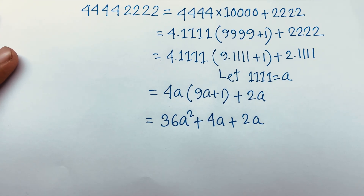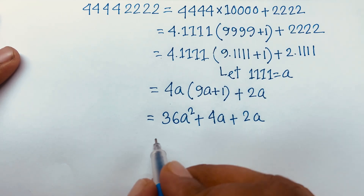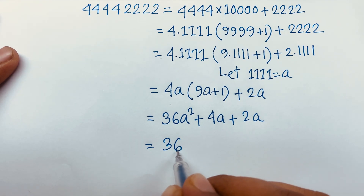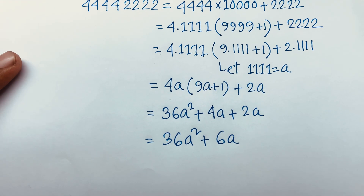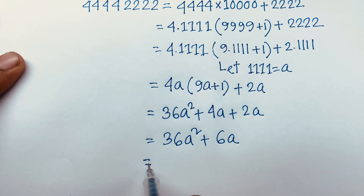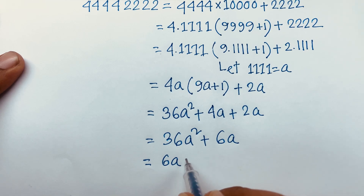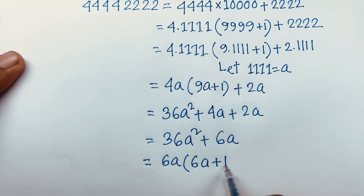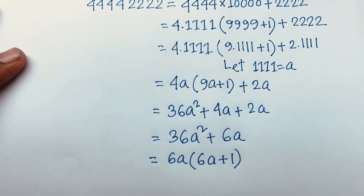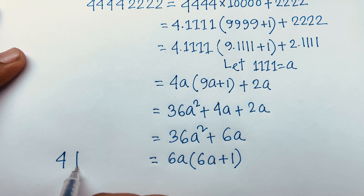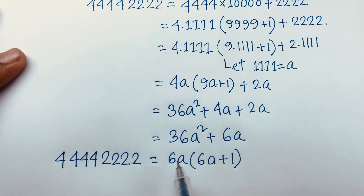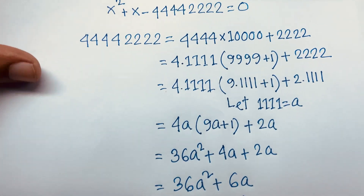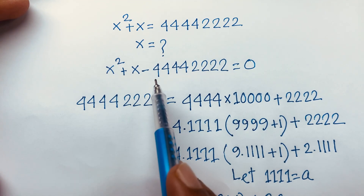This equation becomes 36a squared plus 6a. Then I can see easily 6a is common, so it will be 6a times 6a plus 1. So we find that 44442222 equals 6a times 6a plus 1.